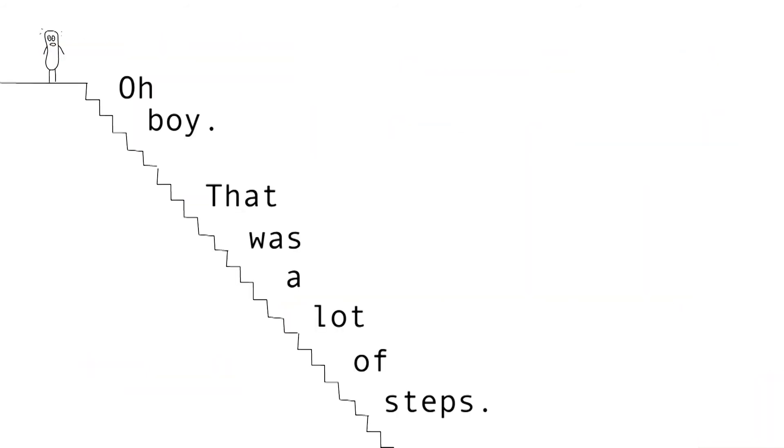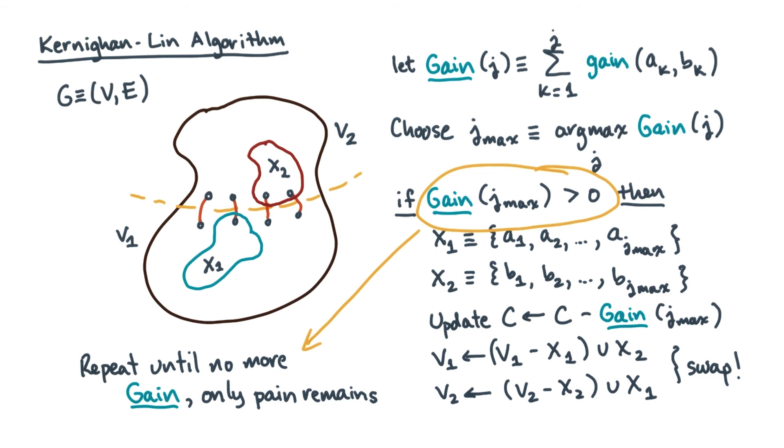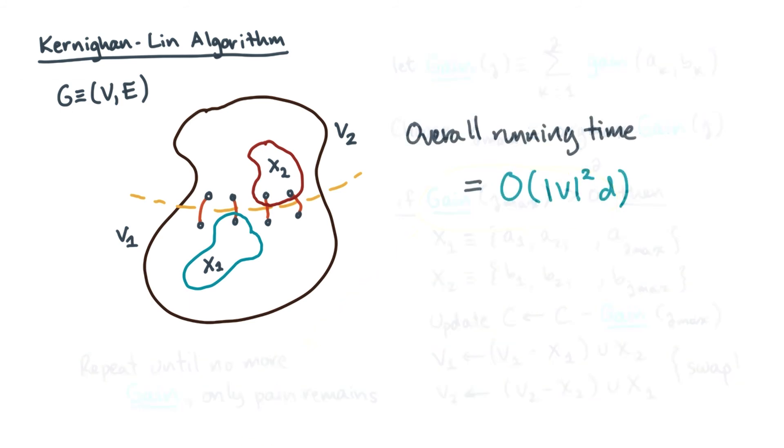Oh boy, that was a lot of steps. But hopefully the general idea is clear. Now the main issue with this algorithm is its cost. Its sequential running time is big O of v squared times d, where again, d is the maximum degree of any vertex.